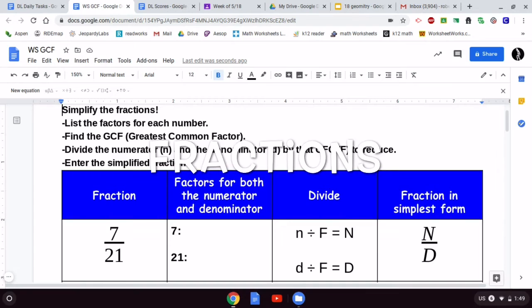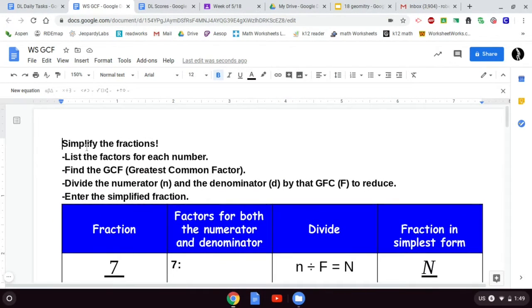We are hitting up several different standards in one shot. Let's go through how to do this. First, at the top of the document you'll find there's some directions: simplify the fractions, list the factors for each number, find the GCF greatest common factor, divide the numerator n and the denominator d by that GCF F to reduce, enter the simplified fraction.